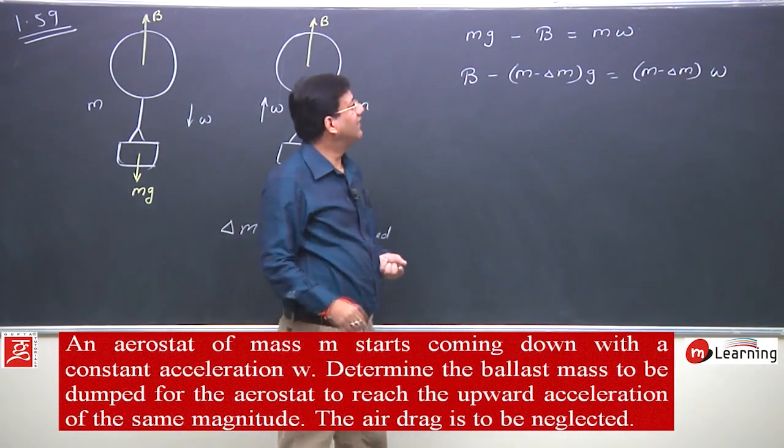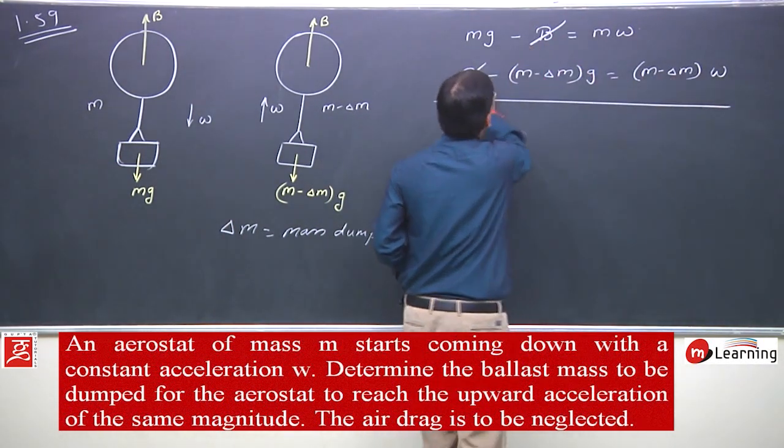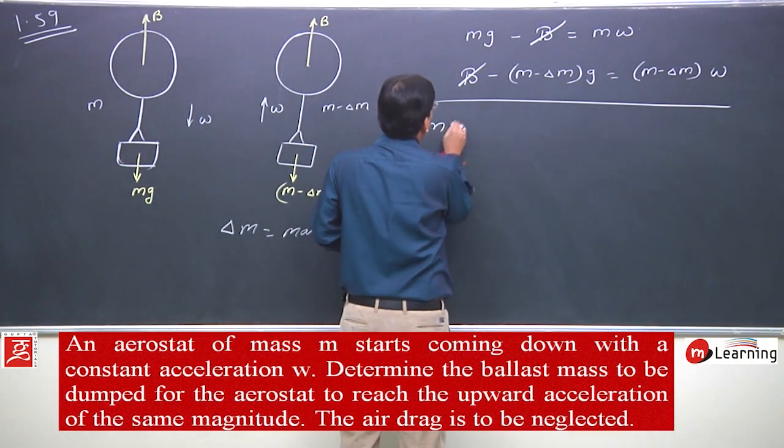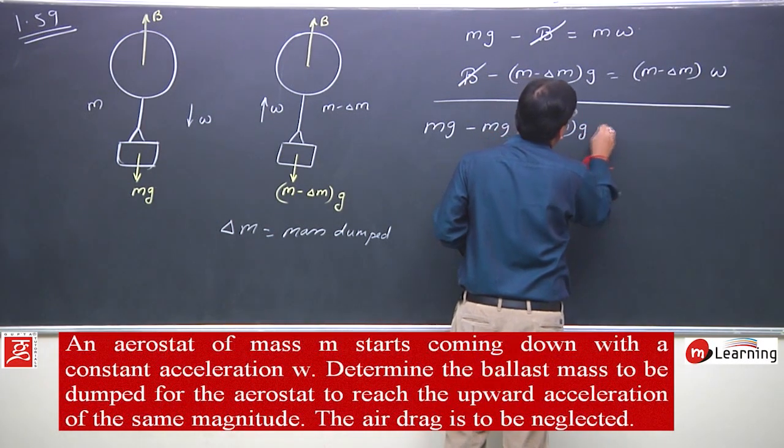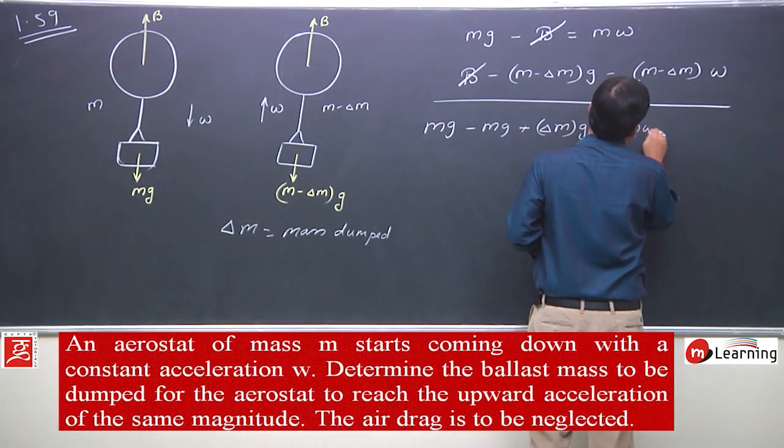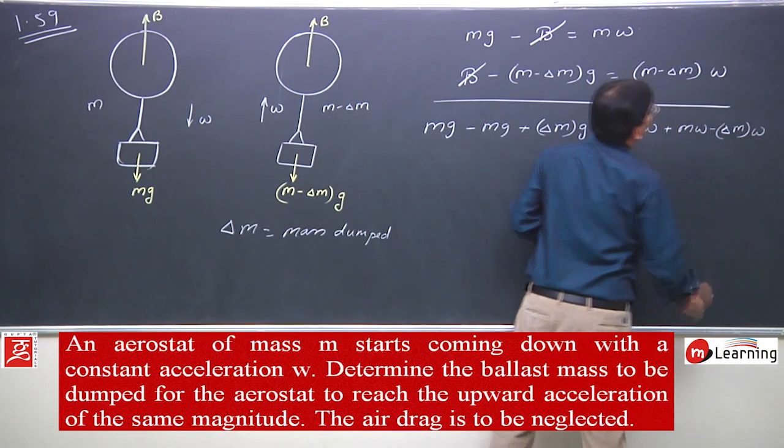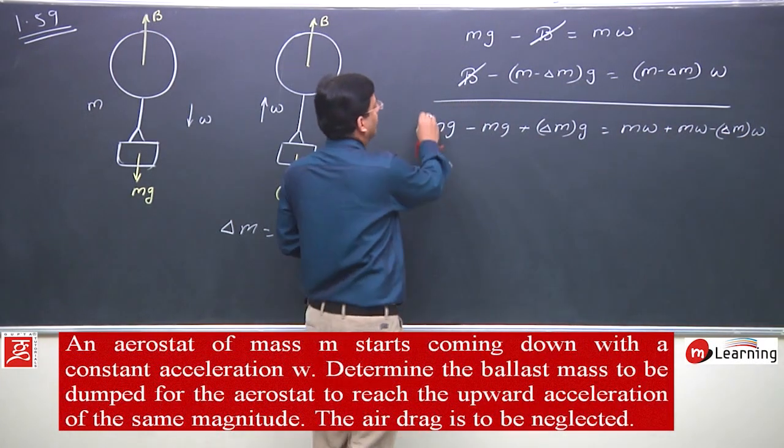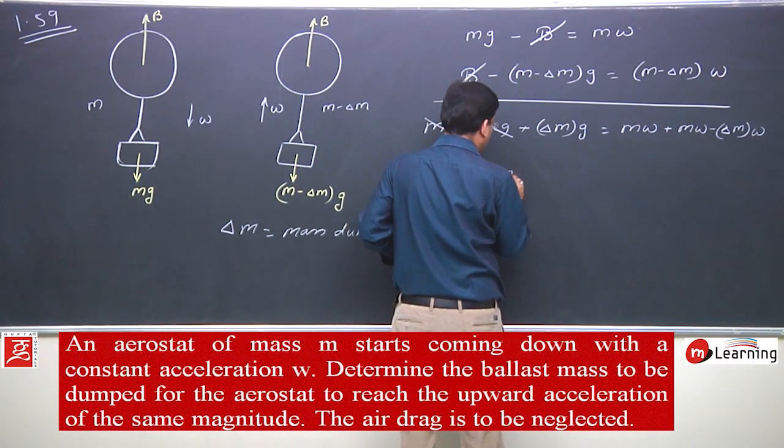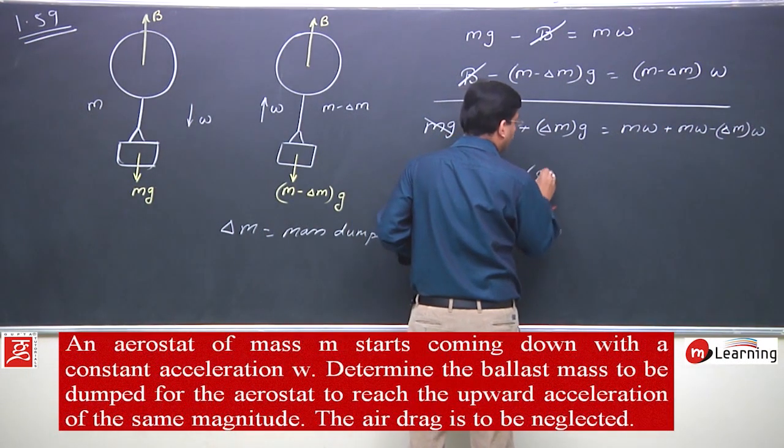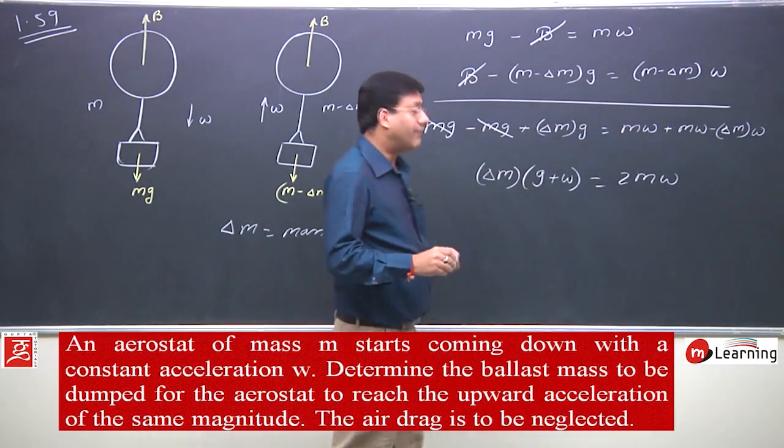We may add these two equations to solve it. mg minus mg plus delta m times g equals mw plus mw minus delta m times w. The mg terms cancel. So delta m times (g + w) equals 2mw.